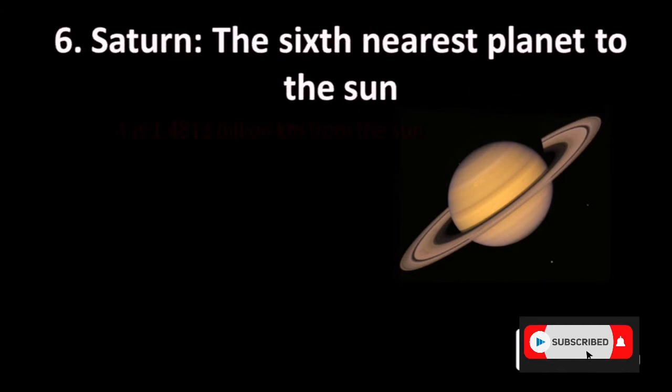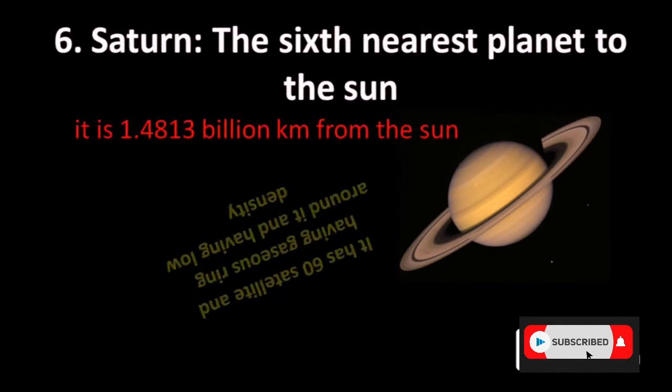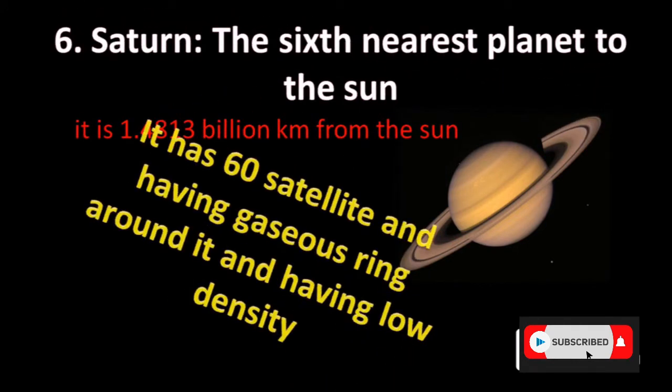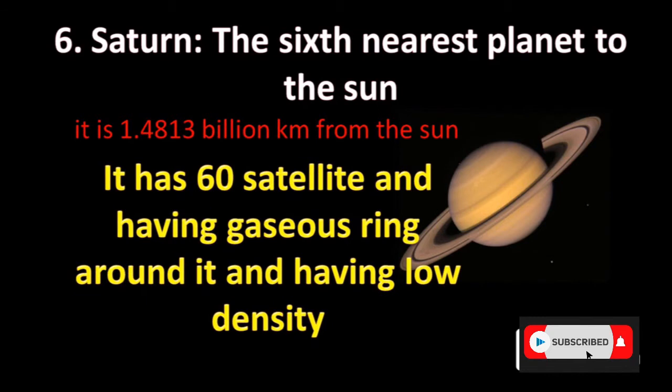Saturn is the sixth nearest planet to the sun. It is 1.4813 billion kilometers from the sun. It has 60 satellites, a gaseous ring around it, and has low density. It is the second largest planet of the solar system.